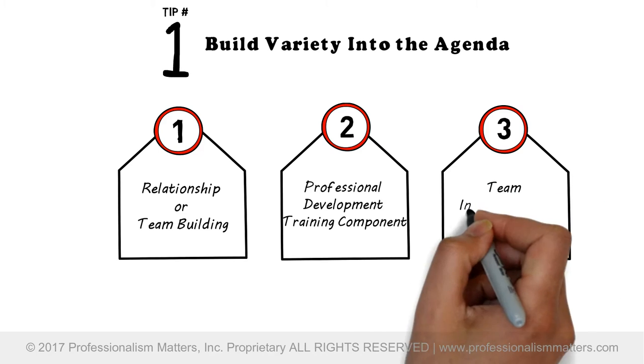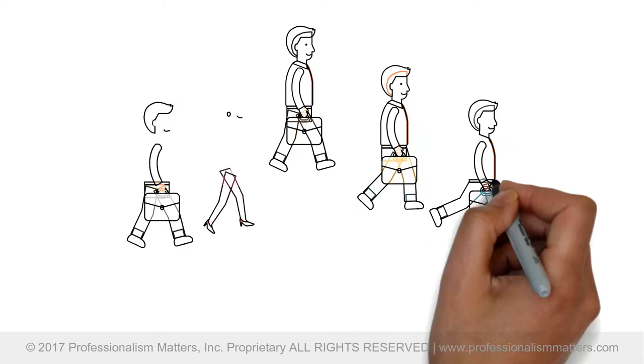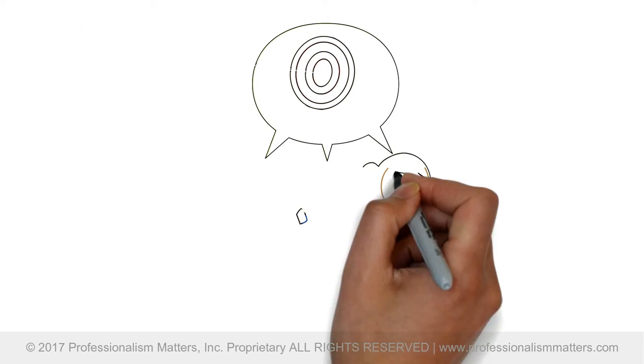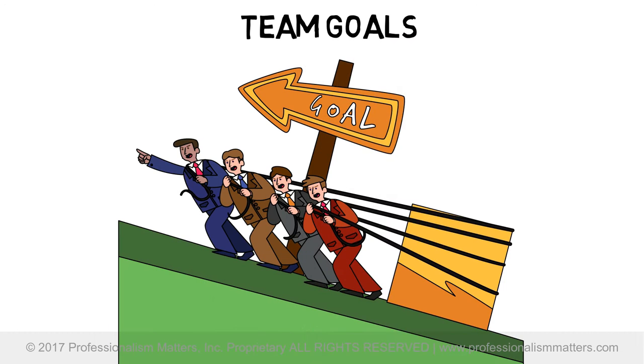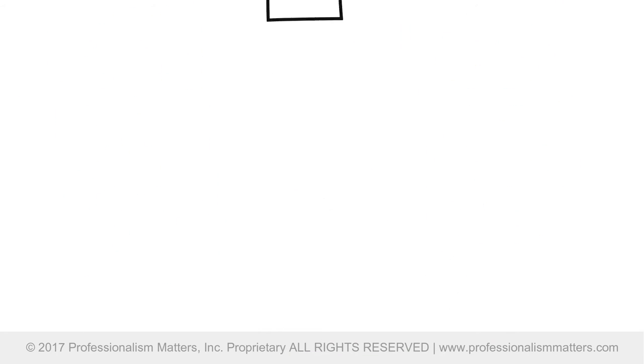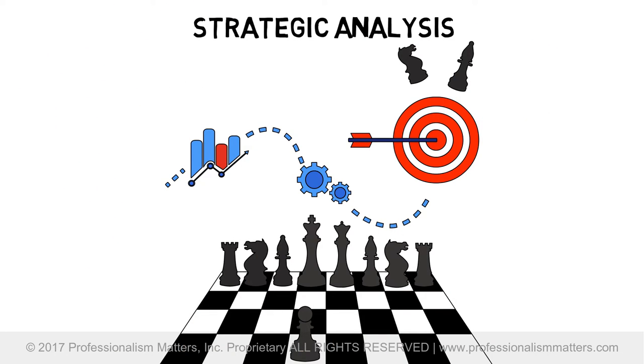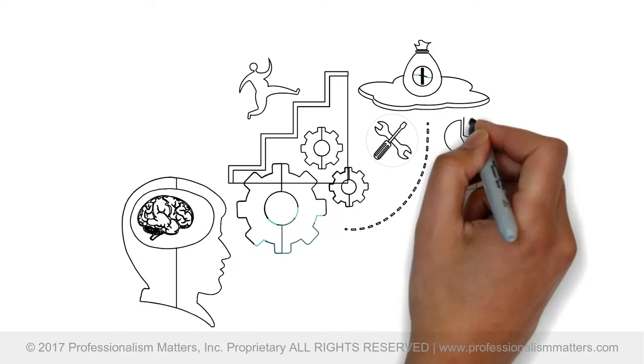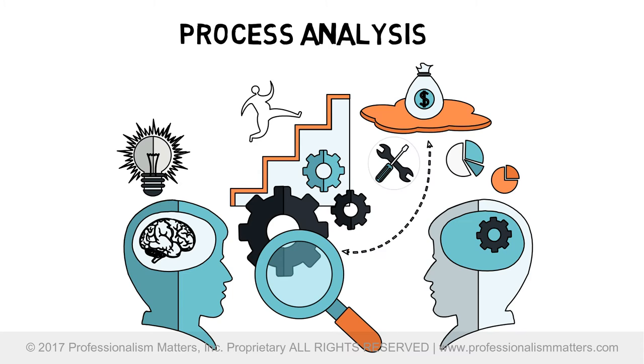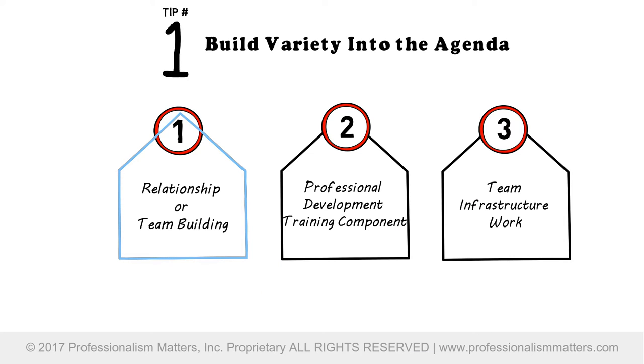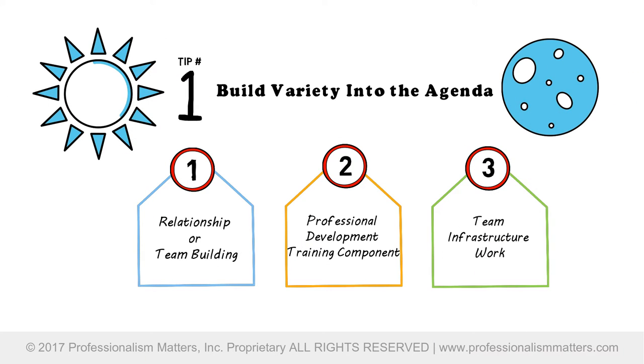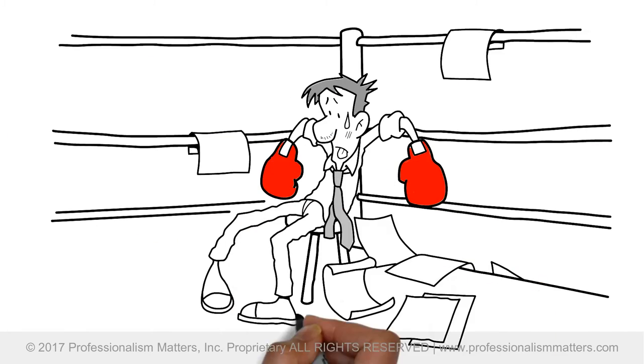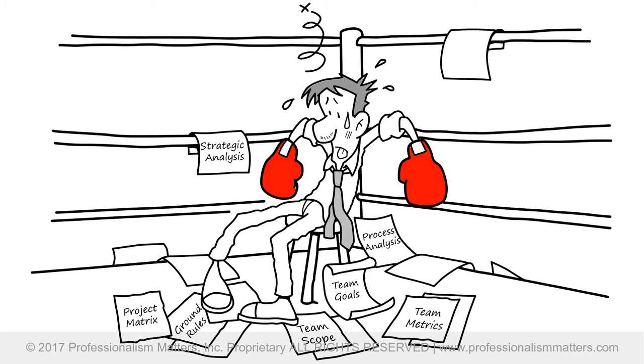And number three, team infrastructure work. This is where the team works on an area of interest specific to their team. It could be defining elements of their team charter like goals, metrics, or ground rules, conducting strategic analysis, or analyzing a specific process that needs attention. Although each of these three elements alone could provide content for a full day retreat, it's much more interesting if you provide a mix. Strategy work may be needed, but no one wants to do it for eight hours straight.